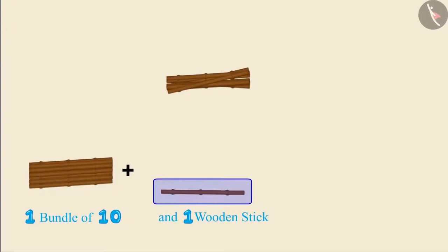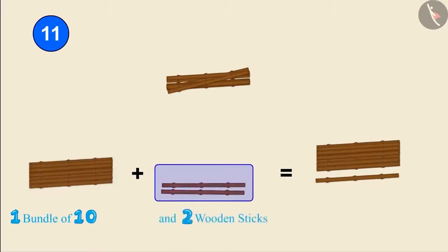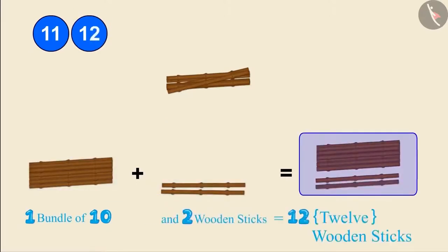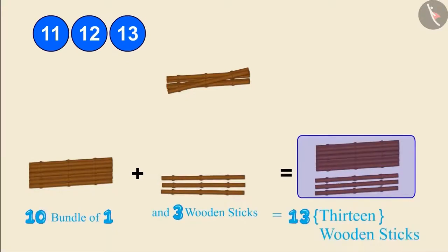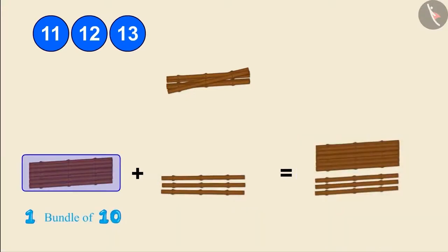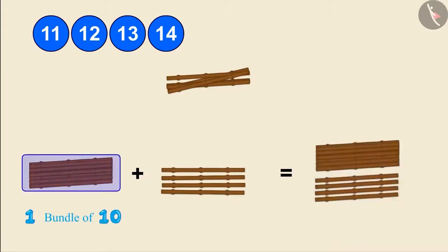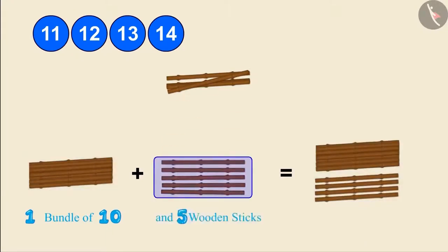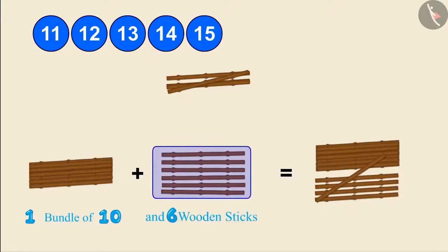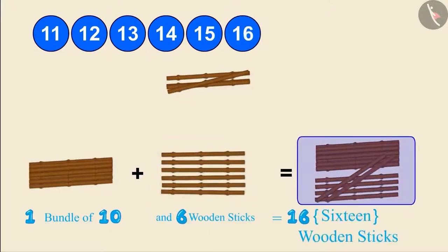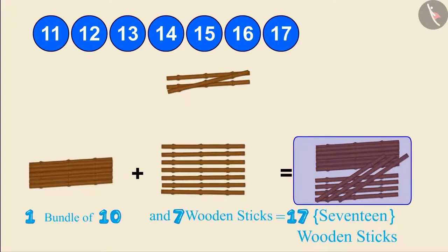One bundle of 10 and one more wooden stick make 11 wooden sticks. One bundle of 10 and two wooden sticks make 12 wooden sticks. One bundle of 10 and three wooden sticks make 13 wooden sticks. One bundle of 10 and four wooden sticks make 14 wooden sticks. One bundle of 10 and five wooden sticks make 15 wooden sticks. One bundle of 10 and six wooden sticks make 16 wooden sticks.